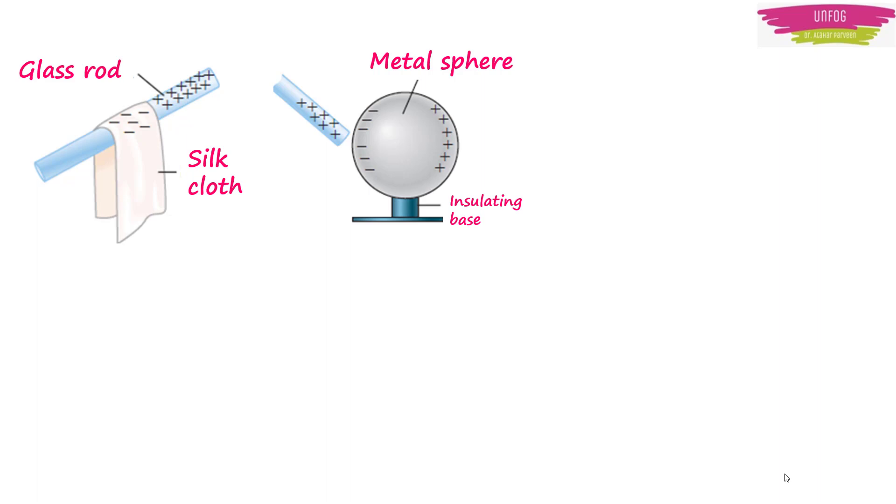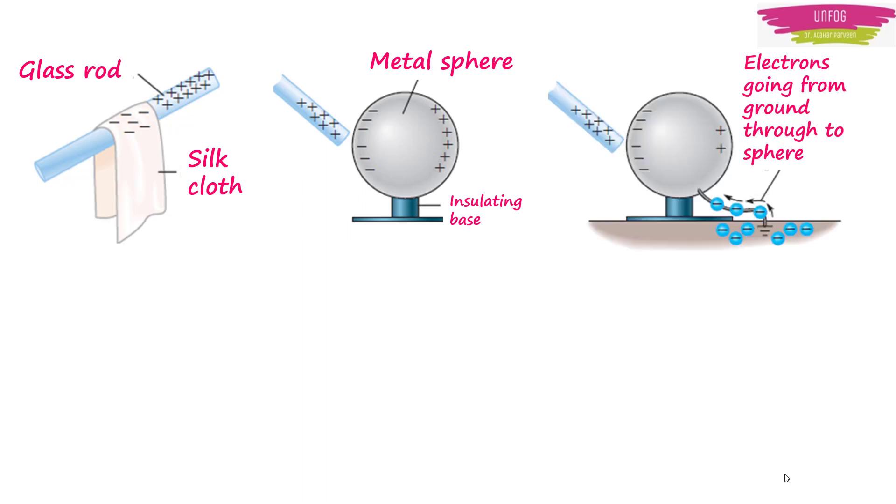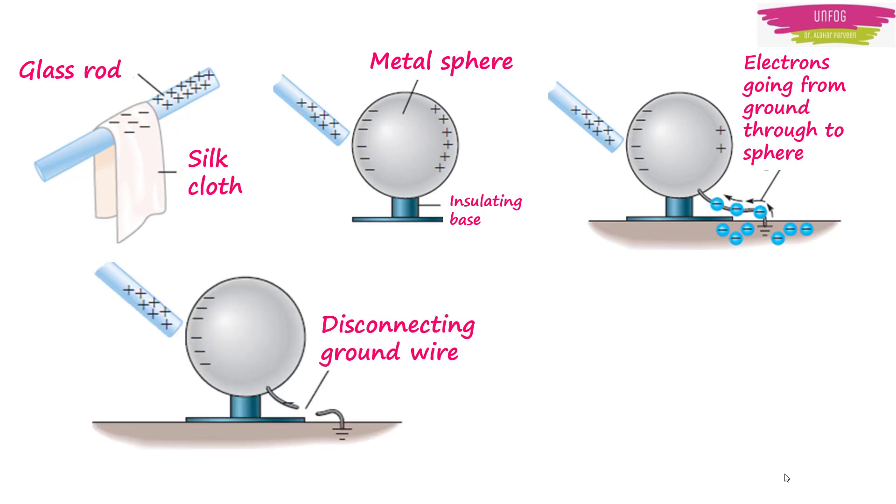The sphere is polarized as free electrons within the sphere are attracted towards the glass rod. When the sphere is grounded, electrons from the ground move onto the sphere. They are actually attracted by positive charges on the sphere. If the ground connection is broken without moving the glass rod, and then if the glass rod is removed, the negative charge present on the metal surface spreads all over because like charges repel each other, and hence the sphere is left with net negative charge because of the excess of electrons and attains an equilibrium.